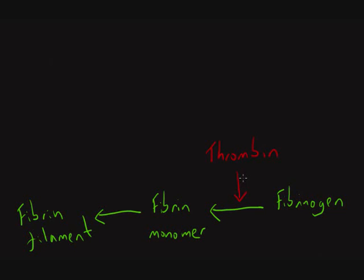Thrombin, which you may have heard of, exists in the blood as prothrombin — that's the enzyme precursor. It circulates as prothrombin, and when activated it becomes the very active enzyme thrombin, which plays a very important role in the whole coagulation cascade. So what we want to know now is: how did we get to this point? How did we produce thrombin from prothrombin? There are two different pathways — the intrinsic and extrinsic pathways.